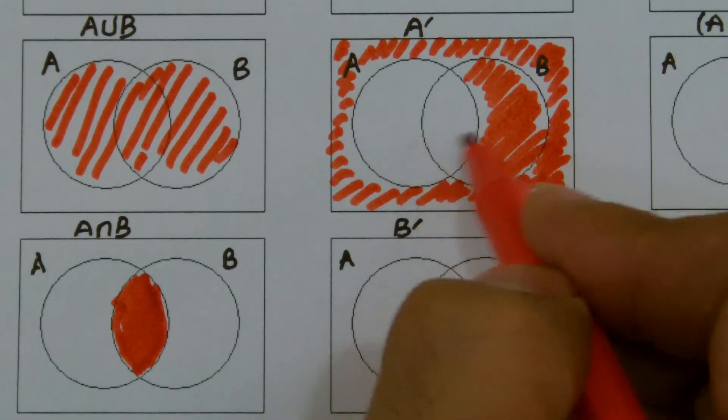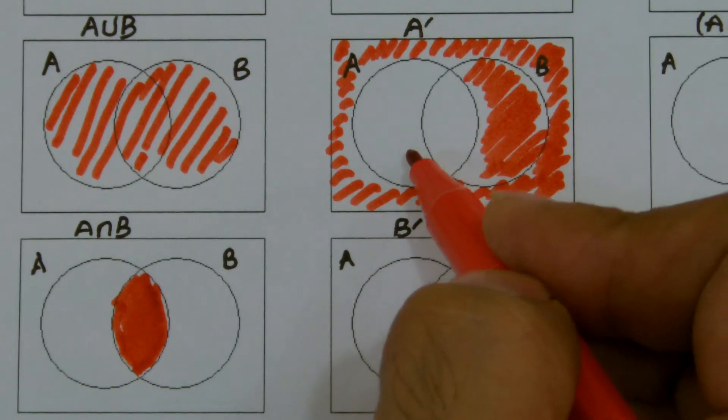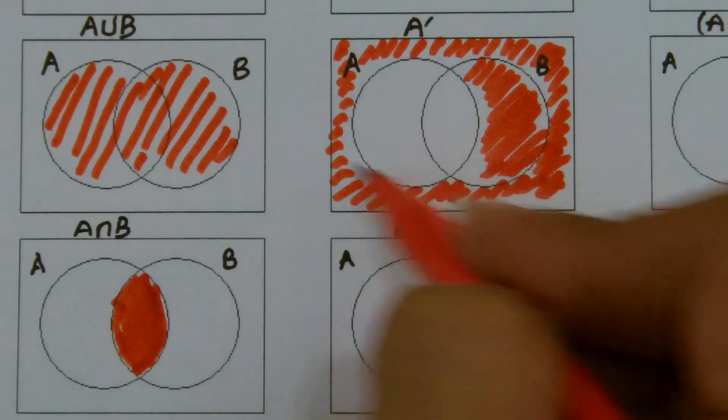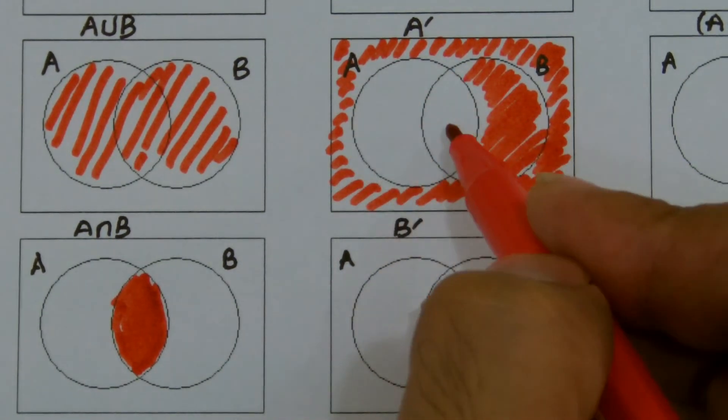Now this is the common part between A and B but eventually this is part of A at the same time. So I'm not supposed to shade this particular region, this entire region. So that's A complement.